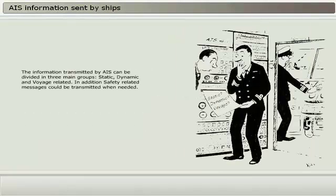The information transmitted by AIS can be divided into three main groups: static, dynamic, and voyage-related. In addition, safety-related messages could be transmitted when needed.